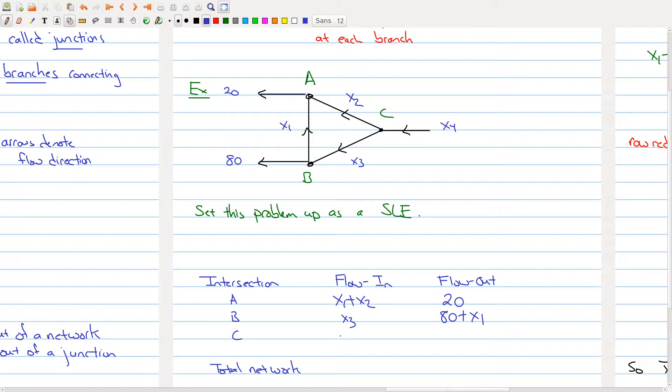For C, the flow in is x4, and the flow out is x2 plus x3. And so this takes care of all the junctions.